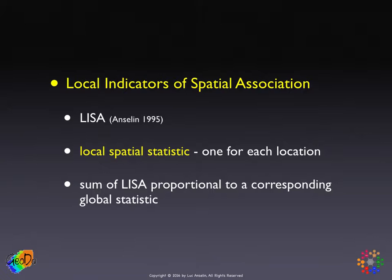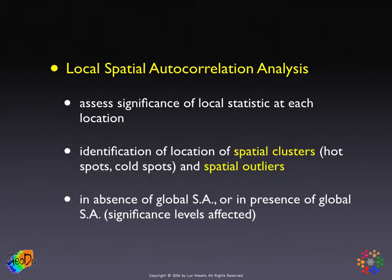For example, the local Moran statistics are connected to the global Moran statistic in that the latter is the average of the local Moran statistics. This connection between global and local can then be used to tease out potential structural instabilities in the global statistic, as we saw when we looked at the lowess fit through the Moran scatter plot.